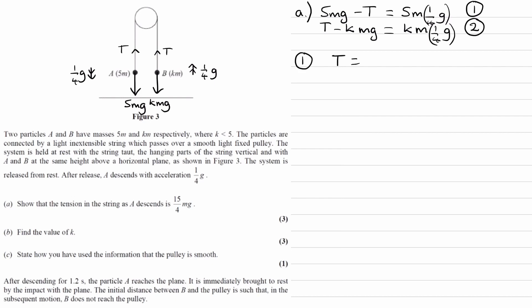I'll bring the 5 times 1/4 mg to the left. That becomes minus. So this will be 5mg minus 5/4 mg. And 5 minus 5/4 will end up being 15/4. That's part A.